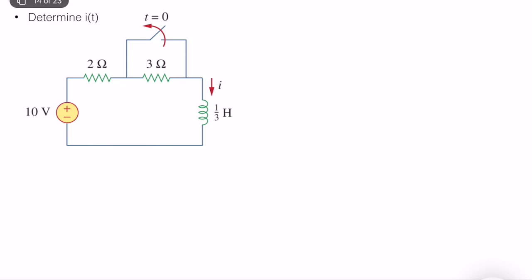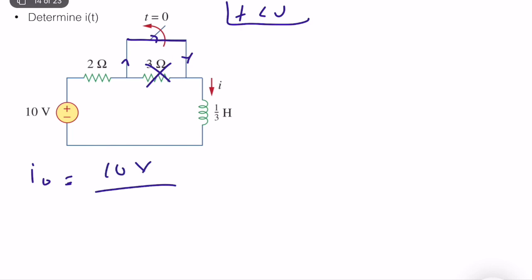Let's solve an example. In this circuit, it's given that the switch is open at T equal to zero, meaning when T is less than zero it is closed. We first need to analyze the behavior before T equals zero and compute the initial condition. When the switch is closed, the three ohm resistor is eliminated because current flows through the switch. So I zero equals 10 volts divided by the total resistance of two ohms, which equals five amps.